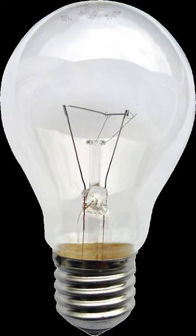120 volt sizes: PAR16, 20, 30, 38, 56 and 64, available in numerous spot and flood beam spreads. Like all light bulbs, the number represents the diameter of the bulb in one-eighth of an inch. Therefore, a PAR16 is 2 inches in diameter, a PAR20 is 2.5 inches in diameter, PAR30 is 3.75 inches and a PAR38 is 4.75 inches in diameter.